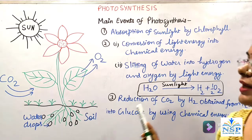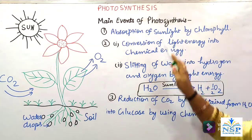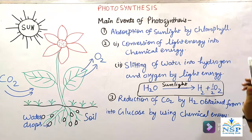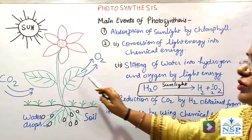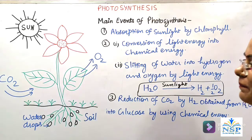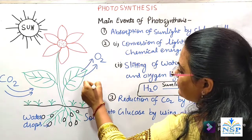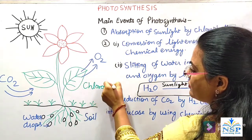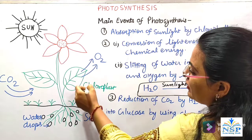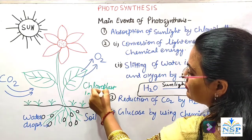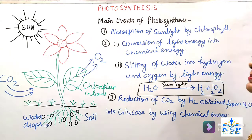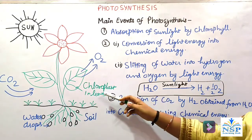अब एक question आता है — what is the site of photosynthesis? The site of photosynthesis is the chloroplast, present in the green leaves। Chloroplast — in leaves — इसके अंदर chlorophyll होता है जिसमें photosynthesis की reaction होती है।